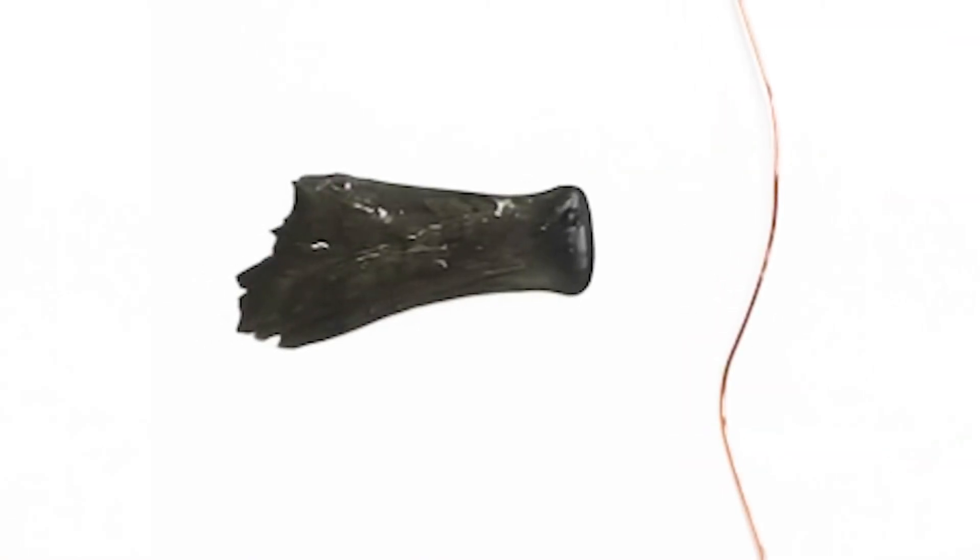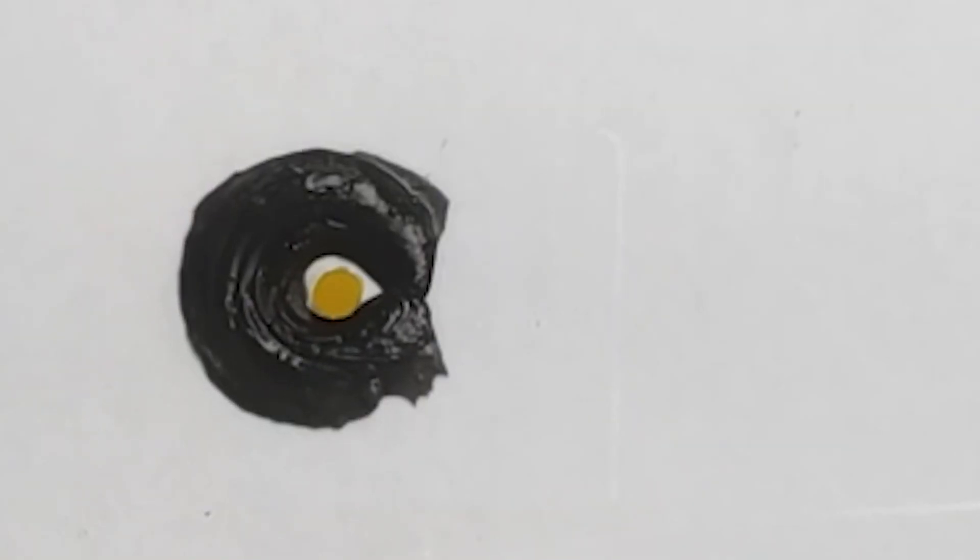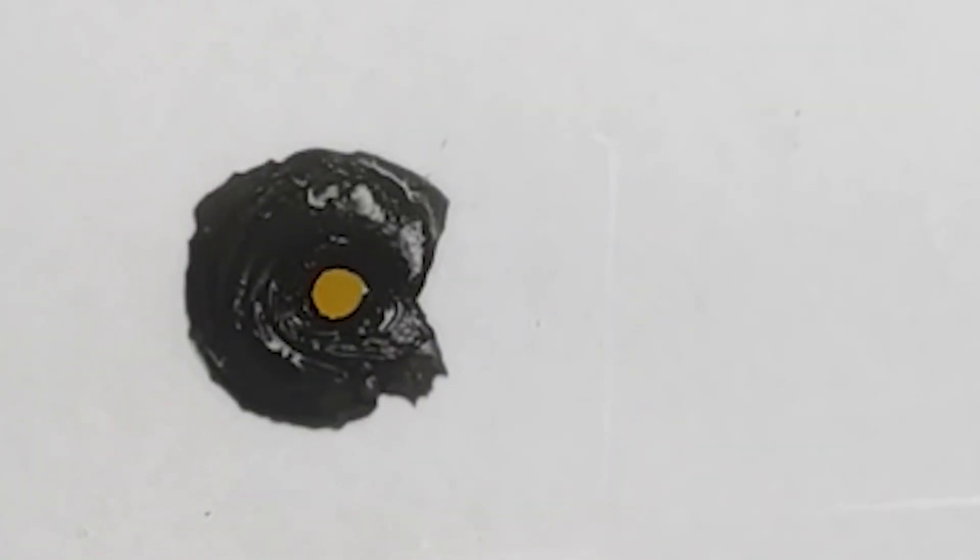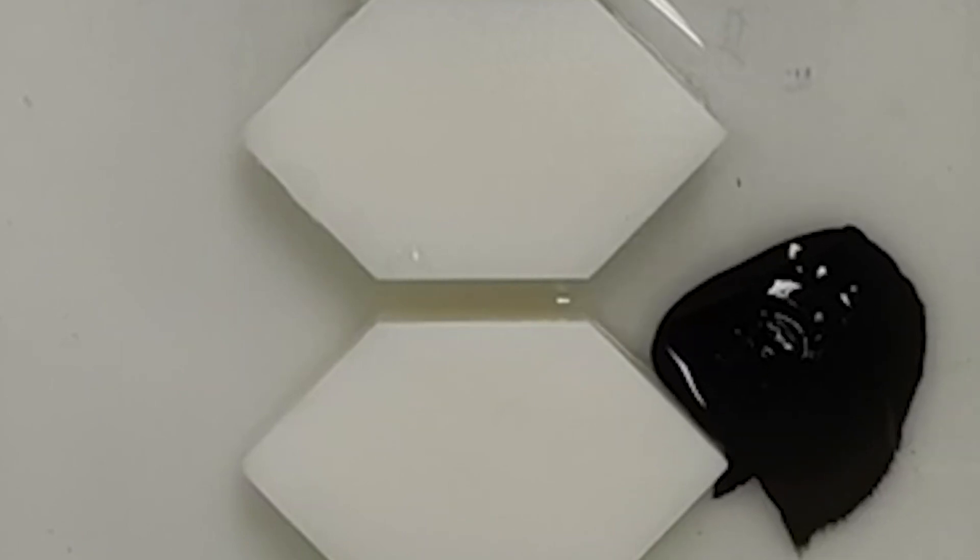A slime robot could be your next surgeon. It wraps around items like an octopus. It can also self-heal by swallowing objects inside your gut. This oozing has potential to change the face of surgery.